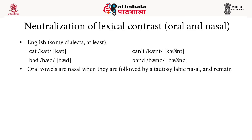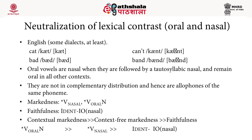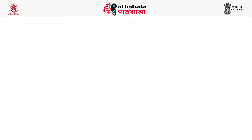The second example concerns the neutralization of lexical contrast in English. In some dialects, we have words like 'cat', 'can't', 'bad', and 'band'. In 'can't' and 'band', the vowel becomes nasalized when followed by a tautosyllabic nasal. Oral vowels are nasal when followed by a tautosyllabic nasal and remain oral in all other contexts — they are allophones of the same phoneme. We posit two markedness constraints: NO NASAL VOWEL and NO ORAL VOWEL BEFORE A TAUTOSYLLABIC NASAL.